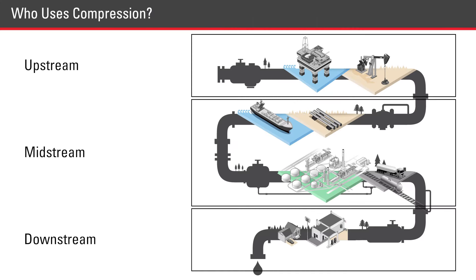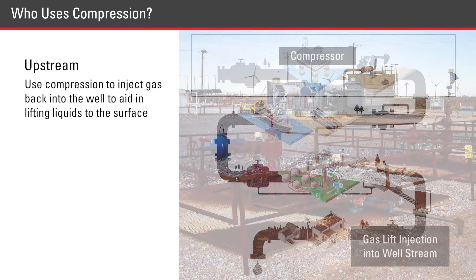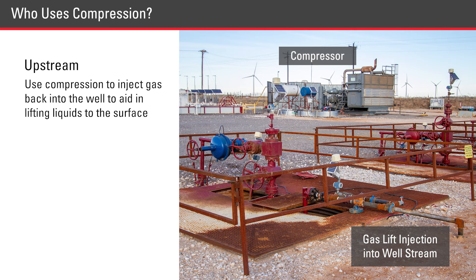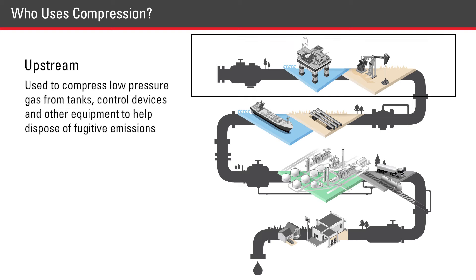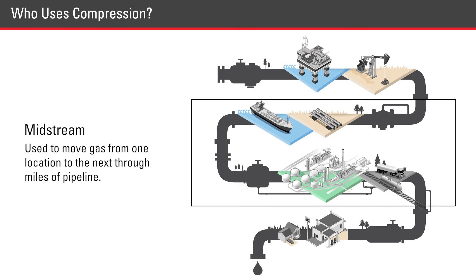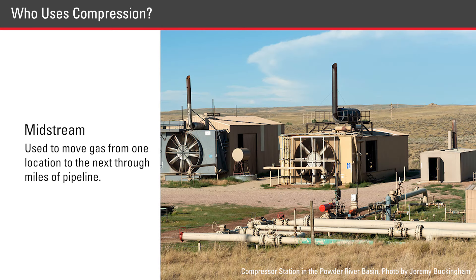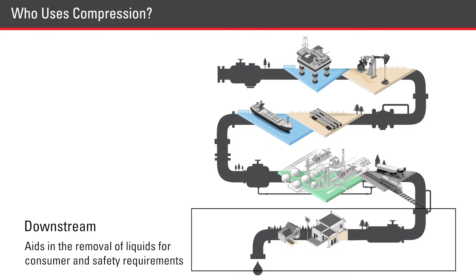Compression is used in every sector of the industry whenever conditions do not normally exist for various processes to take place. Upstream producers use compression to inject gas back into a well to aid in lifting liquids to the surface. They also use it to compress low pressure gas from tanks, control devices, and other equipment to help dispose of fugitive gas emissions. In the midstream, compression is used to move gas from one location to the next through miles of pipeline. In the downstream sector, it aids in the removal of liquids to meet consumer and safety requirements.